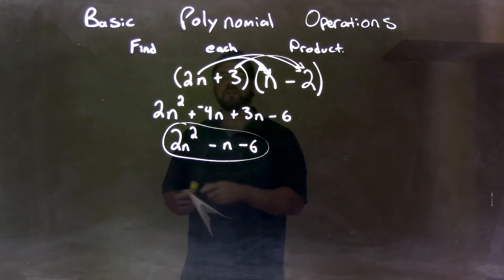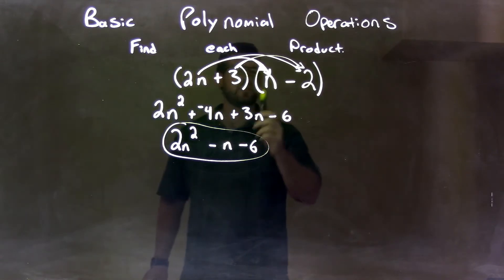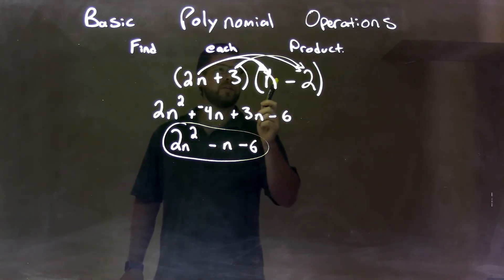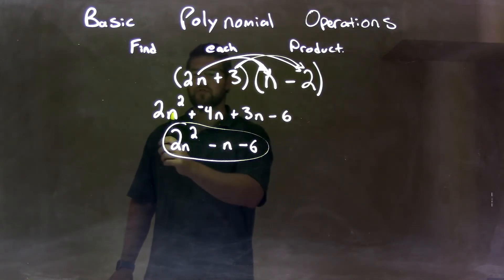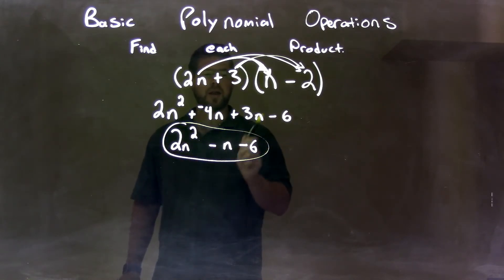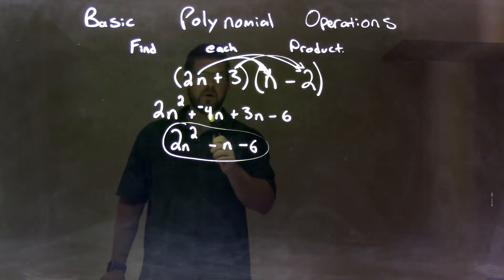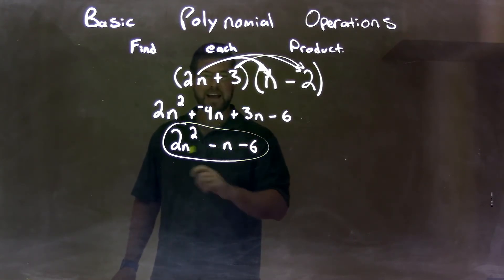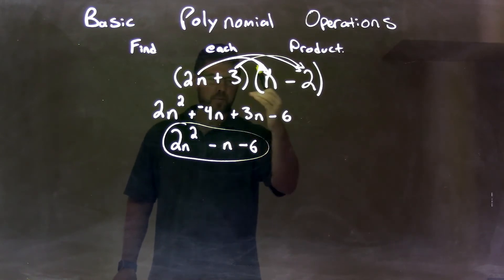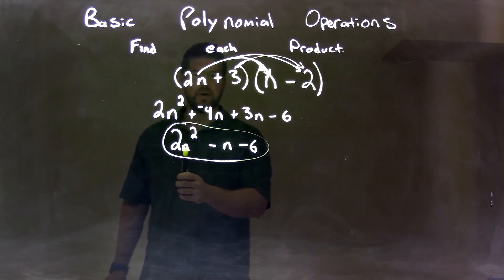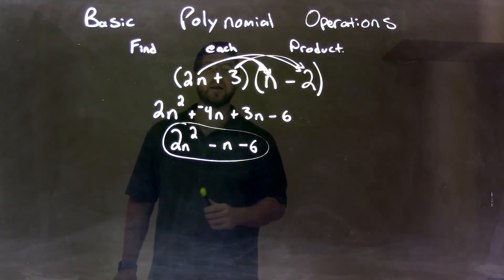So quick recap here. We're given 2n plus 3 times n minus 2. I multiply all parts of the first parenthesis by all parts of the second parenthesis. That gave me 2n squared plus a negative 4n plus 3n minus 6. Then I combined my like terms, which was just a minus 4n and 3n, which gave me a negative n. Then from there, we brought everything else down. And so our final answer again is 2n squared minus n minus 6.